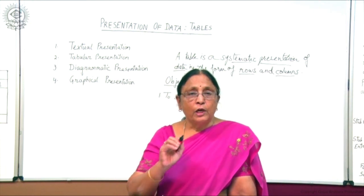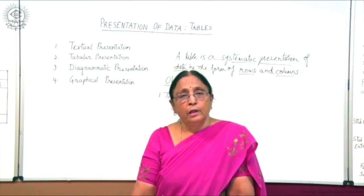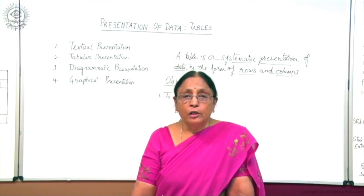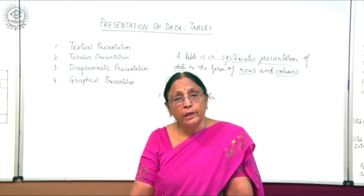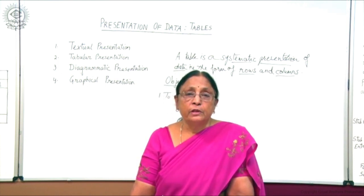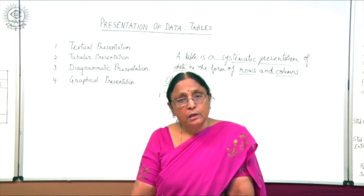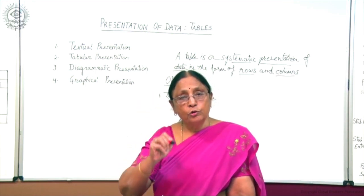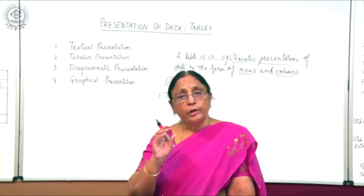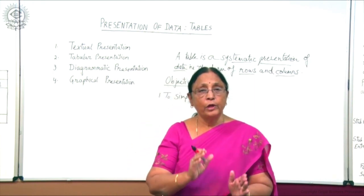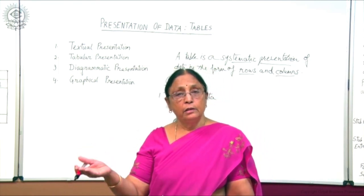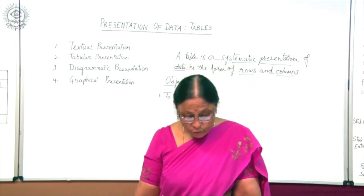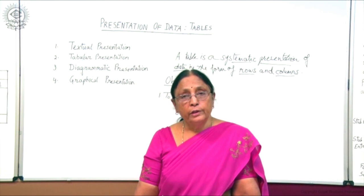For example, in your locality you are collecting data regarding the number of people living in each family. Until and unless you classify them into different columns and rows — such as number of males and females — the description you have gathered will not solve your purpose. You can make one column for the number of females in each household, a second column for males, and then at a glance gather information about how many males, females, and children are living in the locality. This way complex data can be made simple to understand through tabular presentation.